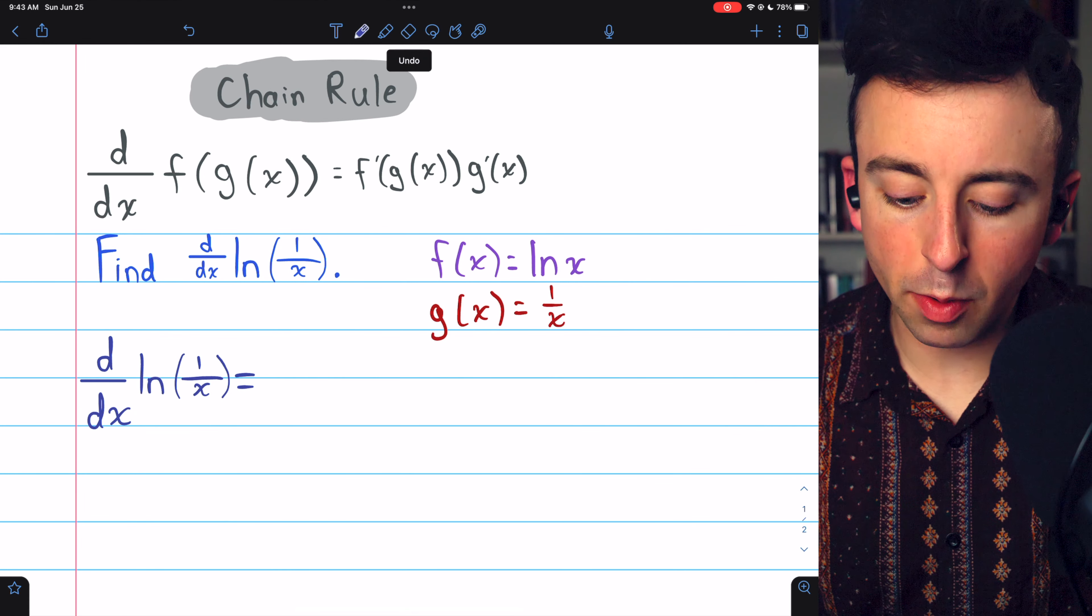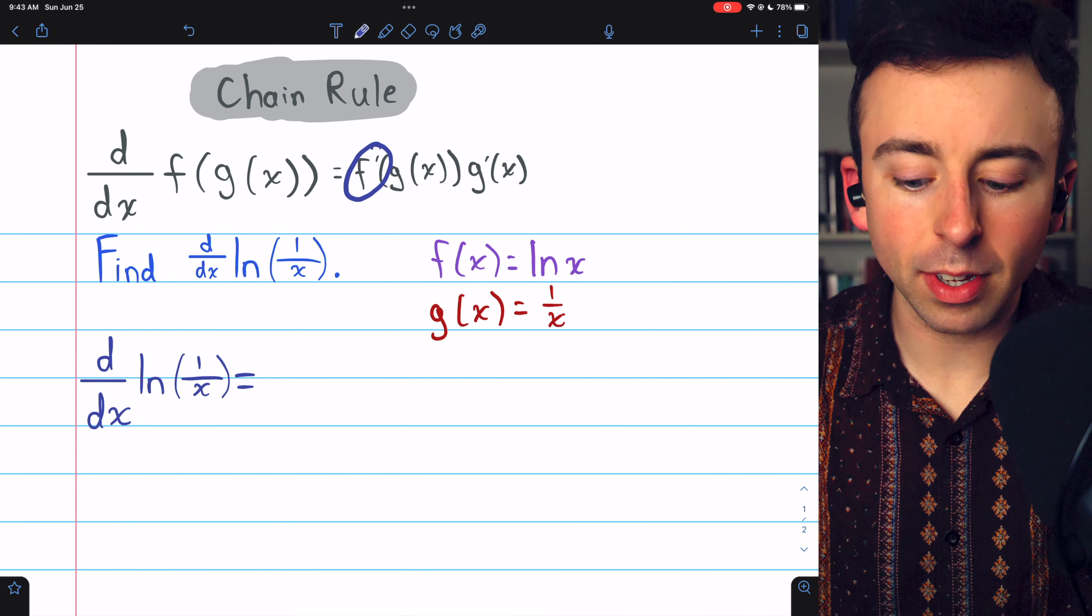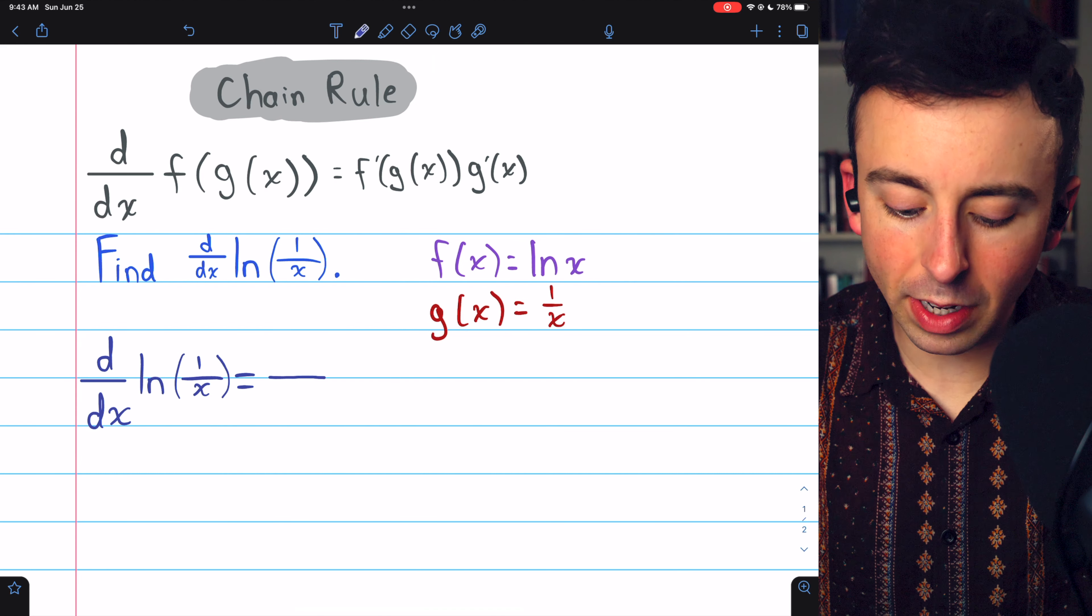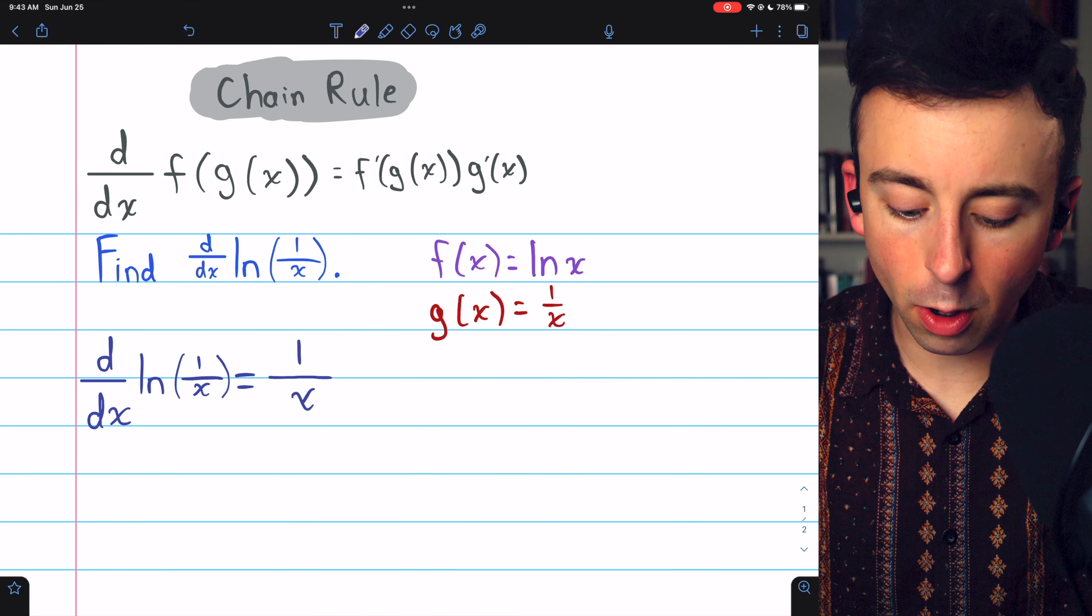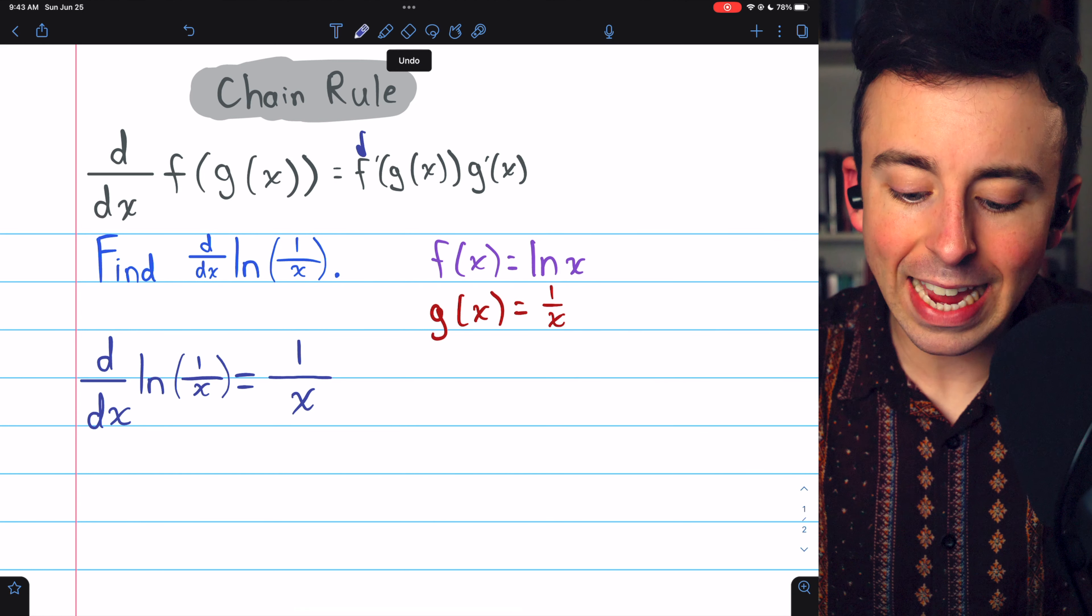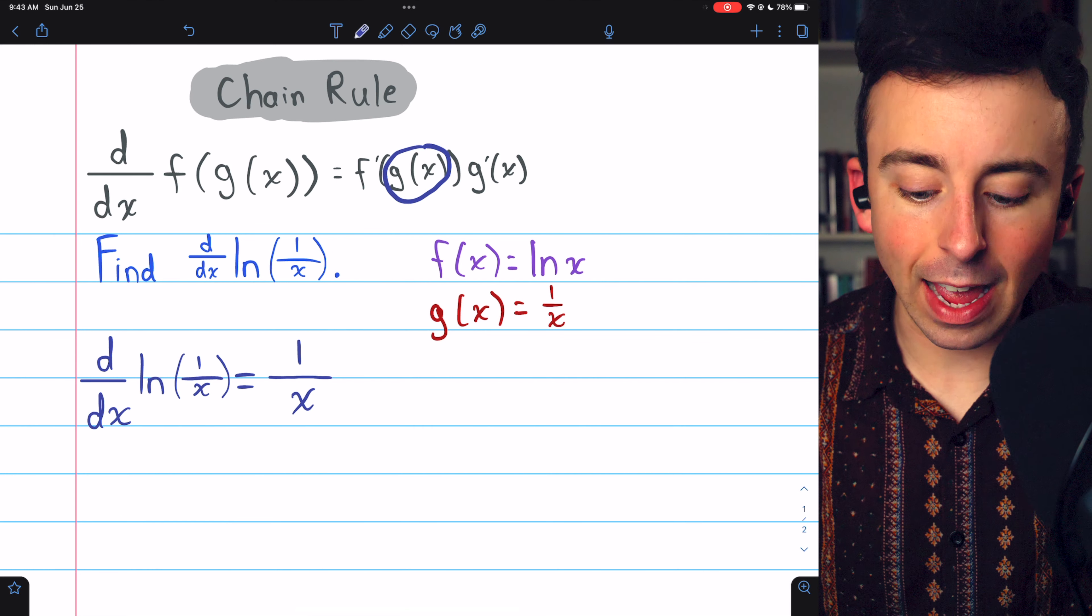The derivative of the natural log of 1 over x will begin with f prime, the derivative of the outside function. The outside function is the natural log of x, and the derivative of the natural log of x is 1 over x. But remember, it's not x that we want in f prime, it's g of x that needs to be in f prime.